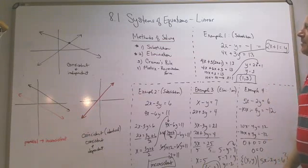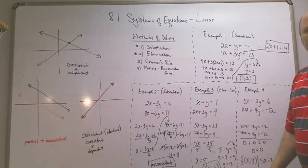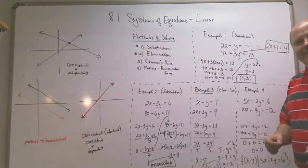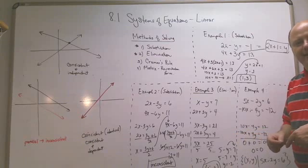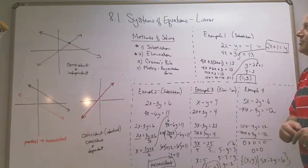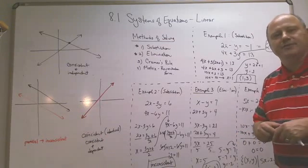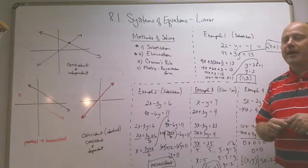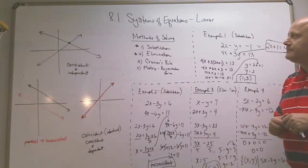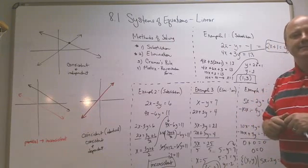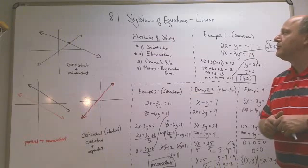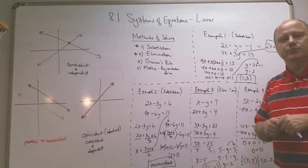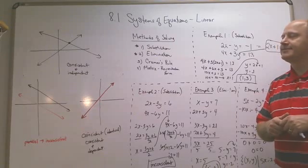Anyway, this is 8.1. For the most part this is a nice easy section. We've got 8.6 to do as well, since 8.1 and 8.6 are relatively easy sections. And with that, 8.1 is concluded — one more section and this course will be done.